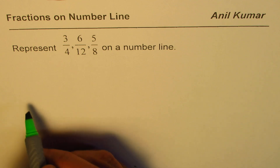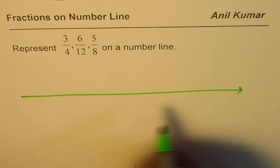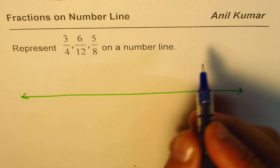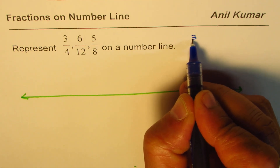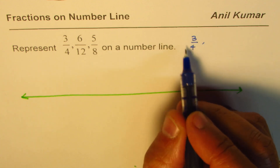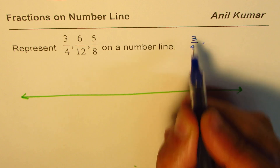Let's first make a number line. Now on this number line we have to represent the given fractions. If you look at these fractions, let's rewrite them as they are: 3/4 — this is where when we divide 1 into 4 equal parts we take 3 out of them.